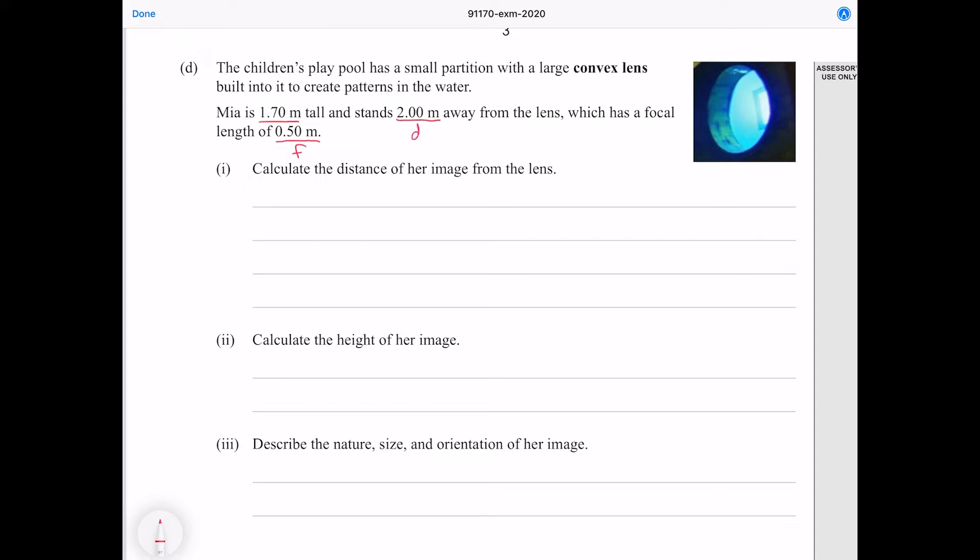So firstly let's establish what we have. We have the focal length, we have the distance of our object which is Mia, and we also have the height of Mia. Now the equation that's going to be most useful here is Descartes which you'll find on your formula sheet. Given that we know the focal length and the distance of the object, we just need to solve this for di, the distance of the image from our lens. I'm first going to do that by subtracting 1 over do from both sides, I'm going to flip the sides around as well.